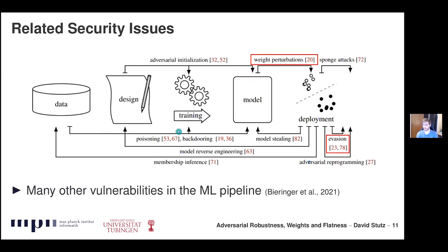On the bigger security map, there is a lot of work on various security-related problems in the ML pipeline. I will mostly talk about evasion attacks — what adversarial examples are called in the security literature, because you evade classification or detection. Later I'll talk about weight perturbations. All of these are interesting both for security and for understanding the models we work with.